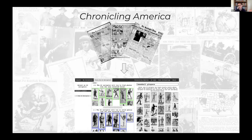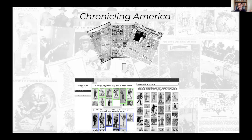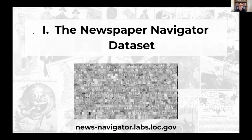The general idea is to start with raw newspaper scans and end up with a full search interface over this visual content. There are really two central steps: first, extracting the visual content and creating what I call the Newspaper Navigator dataset, and second, reimagining how we search over it with the search application.